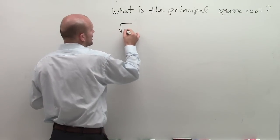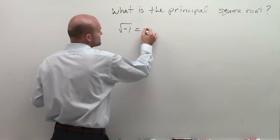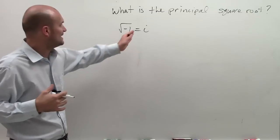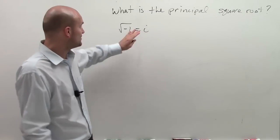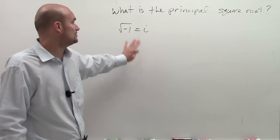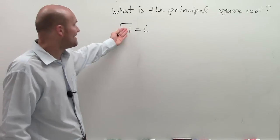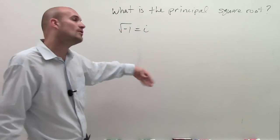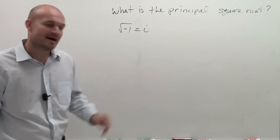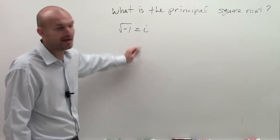Remember, when we were trying to figure out what the square root of negative 1 was, we gave it an identity of the letter i, meaning imaginary. Because our real number system does not have a value for a square root of negative 1. So we give it i as our imaginary number system.